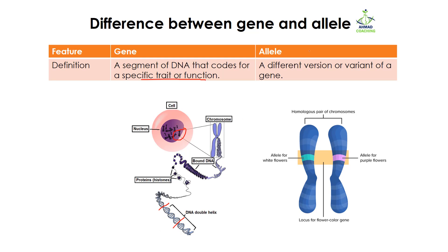When it comes to alleles, alleles are different versions or variants of a gene. The chromosomes in a cell are present as homologous chromosomes, meaning there are two copies of chromosomes present. So if a gene is present on one chromosome, the same gene will also be present on the other chromosome as well. These are genes, but when referring to two different chromosomes, they are known as alleles — different versions of the gene.